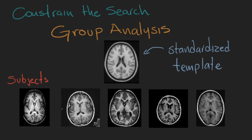However, for research we might want to register individual subjects to a standardized template to perform group analysis. In this case, the transformation matrix will include all the parameters, so we can translate, rotate, scale, and skew the brains in three dimensions to make them match the standard in the best way, so we can get more accurate results at the group level.